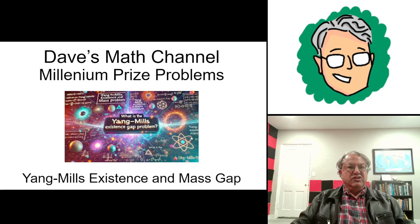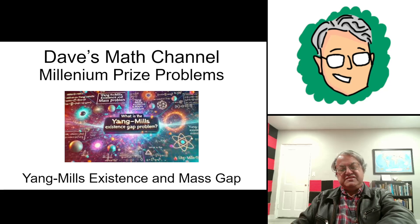But there's six remaining, each of which involves a million-dollar reward for whoever can solve any of them, including this one, the Yang Mills existence and mass gap problem. So let's begin.